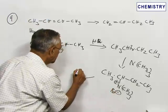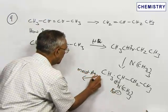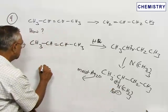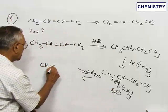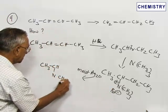This is treated with moist silver oxide. The role of moist silver oxide is to convert the bromide to the hydroxide. So the corresponding hydroxide will be produced instead of the bromide.